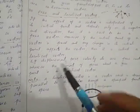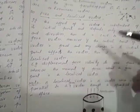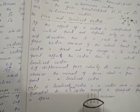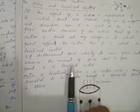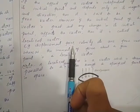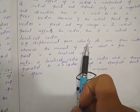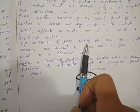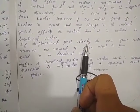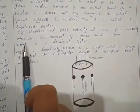Similarly, force is also a free vector because it does not depend on its initial point — force can exist anywhere. And velocity is also a free vector because it does not depend on its initial point — it only depends on magnitude and direction. So these are all examples of free vectors.